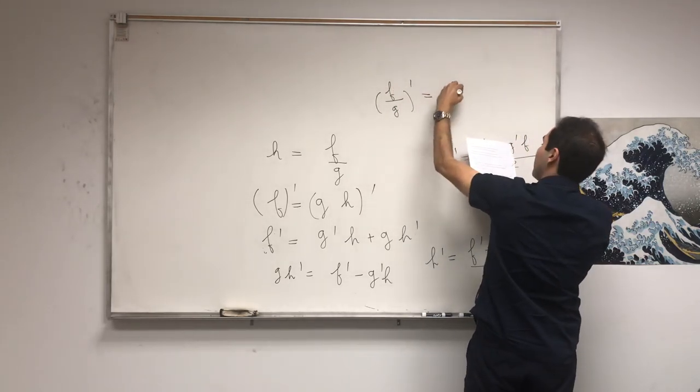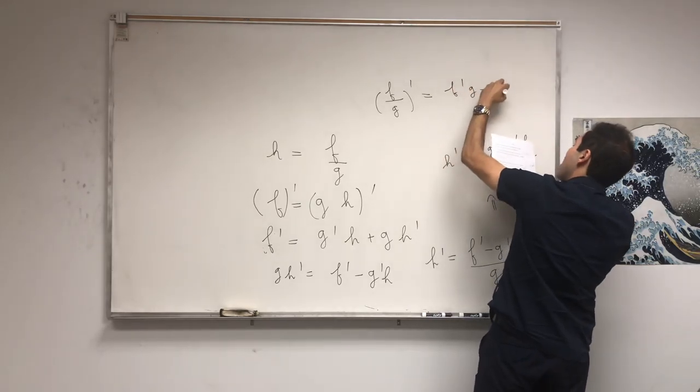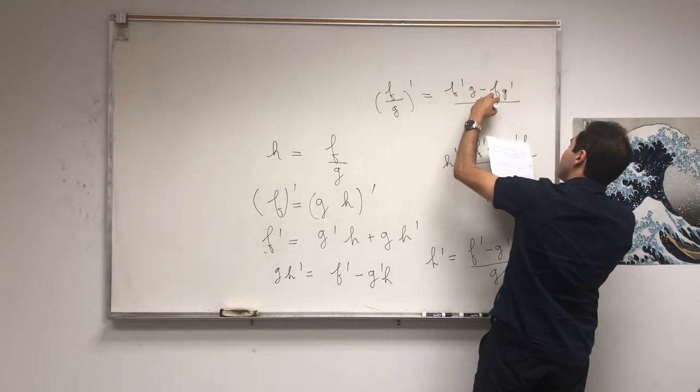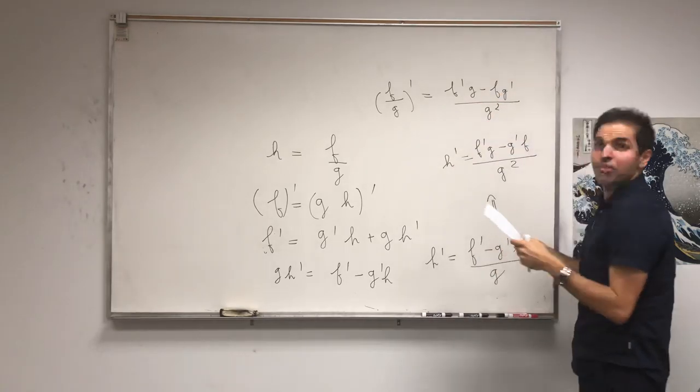After Einae f-pano apo g-prime, issu taime f-prime g, meion f-g-prime, se g tetragono. Tetragono? Tetragono?